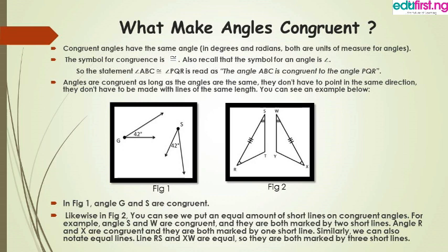So angles are congruent when the angles are the same. They don't have to point to the same direction, they don't have to be made of the same line, and it is not necessary that the lengths will be the same. Just like in Figure 1 — one angle looks like it's pointing up to the right, and the other is pointing downward. They are not oriented the same, but angle G and angle S are congruent. As you can see, angle G is 42 degrees and angle S is also 42 degrees, so they are congruent.